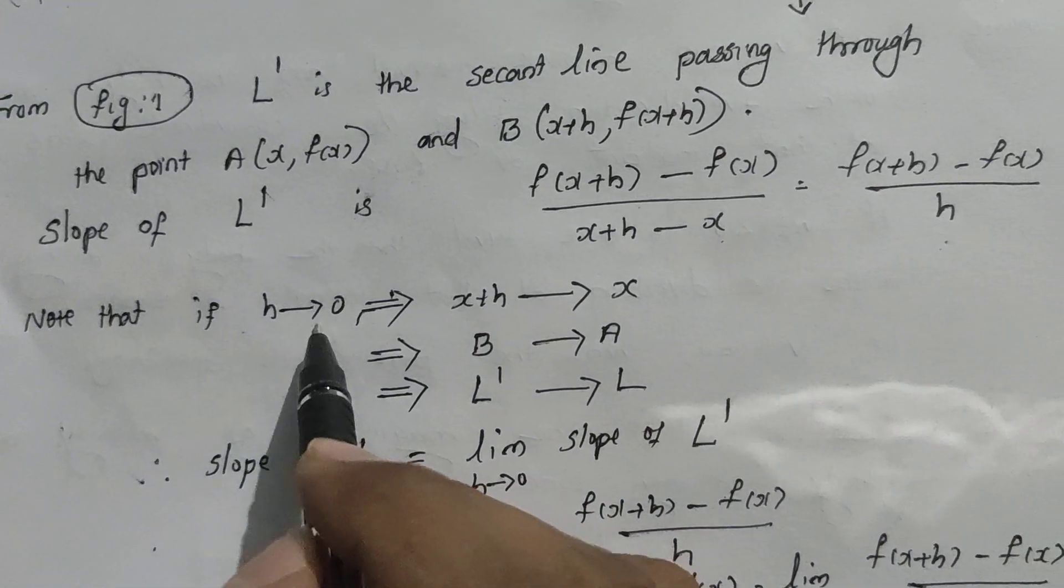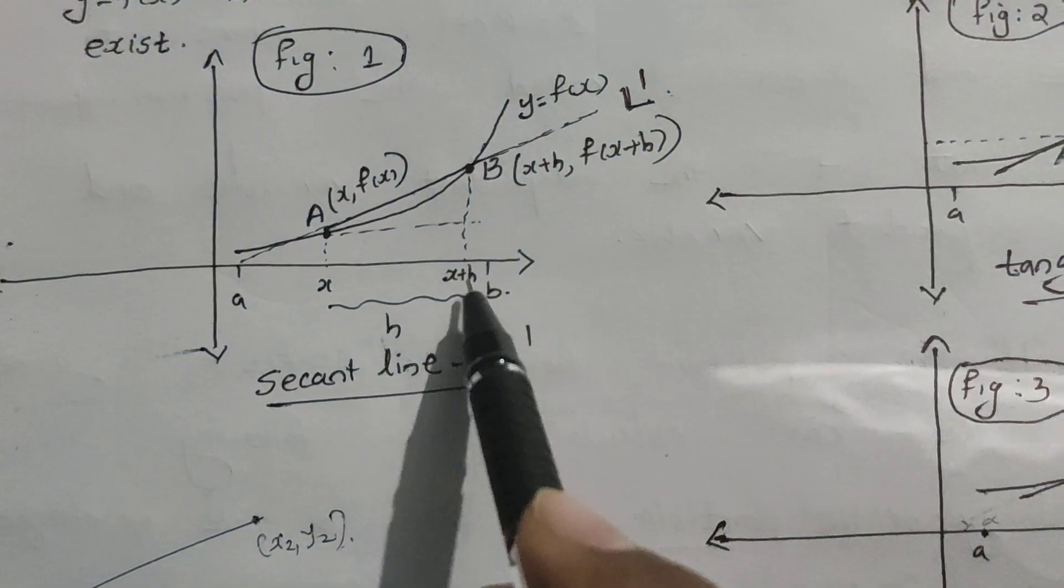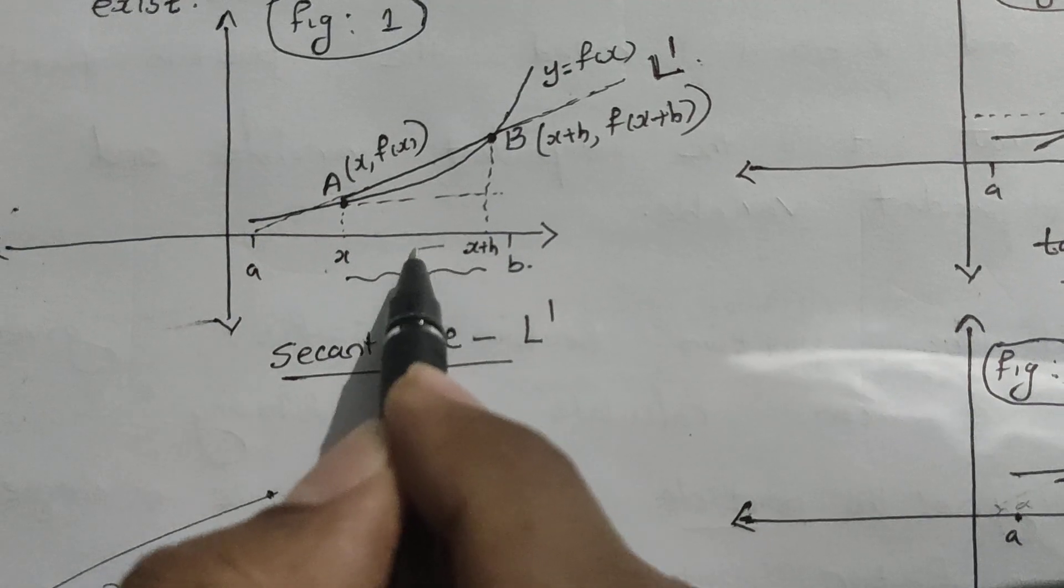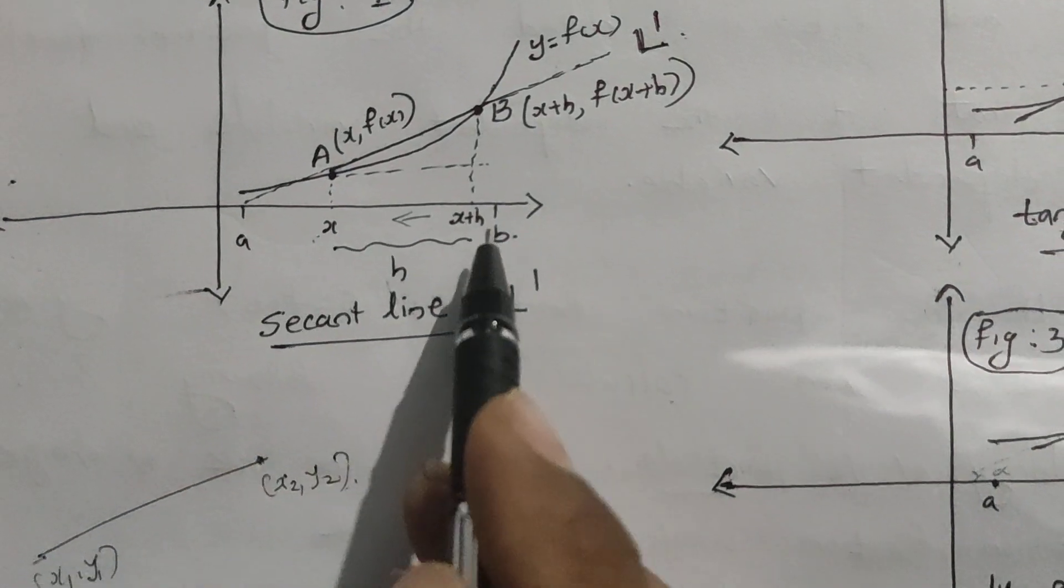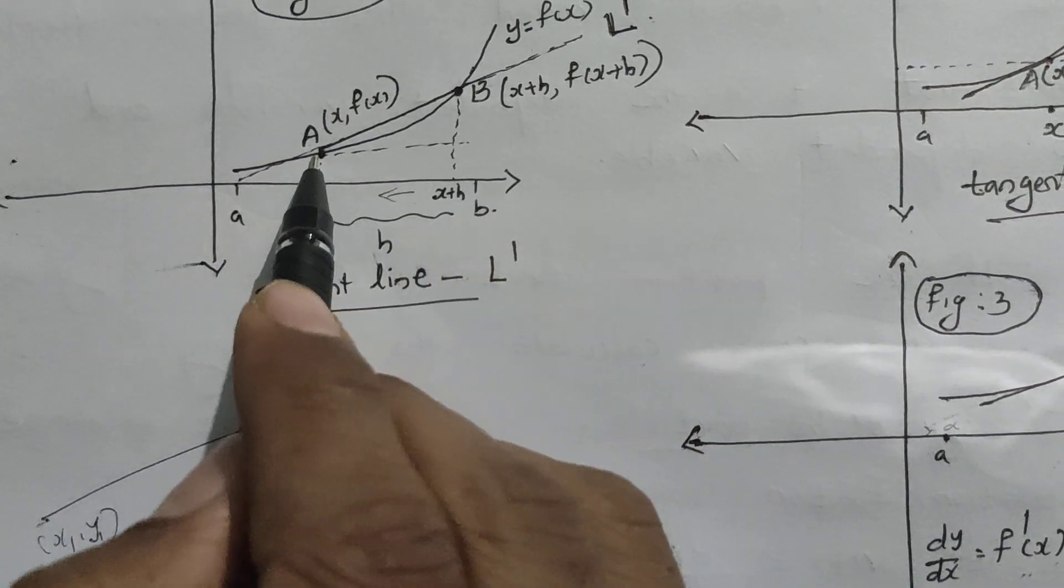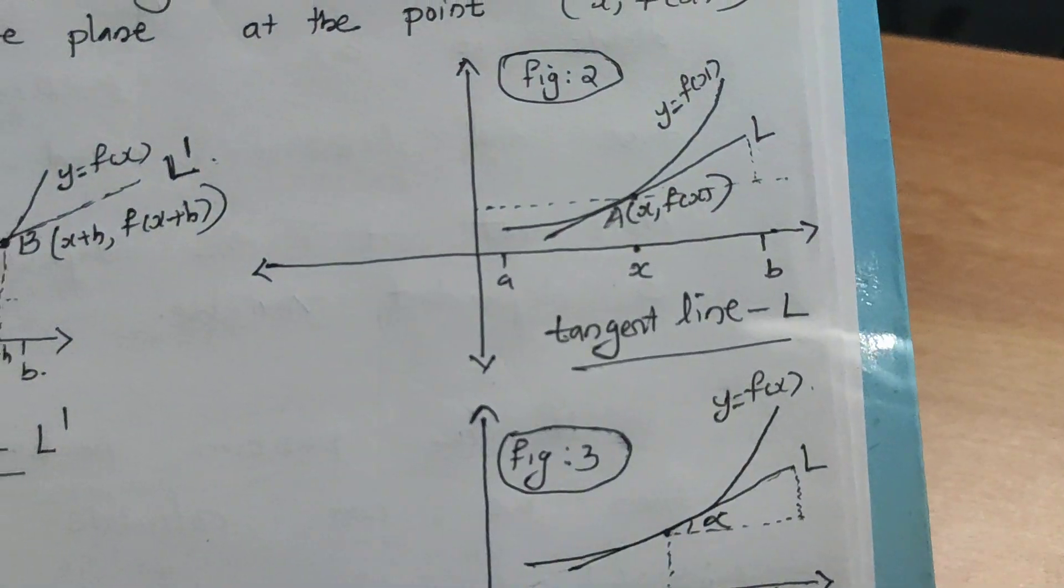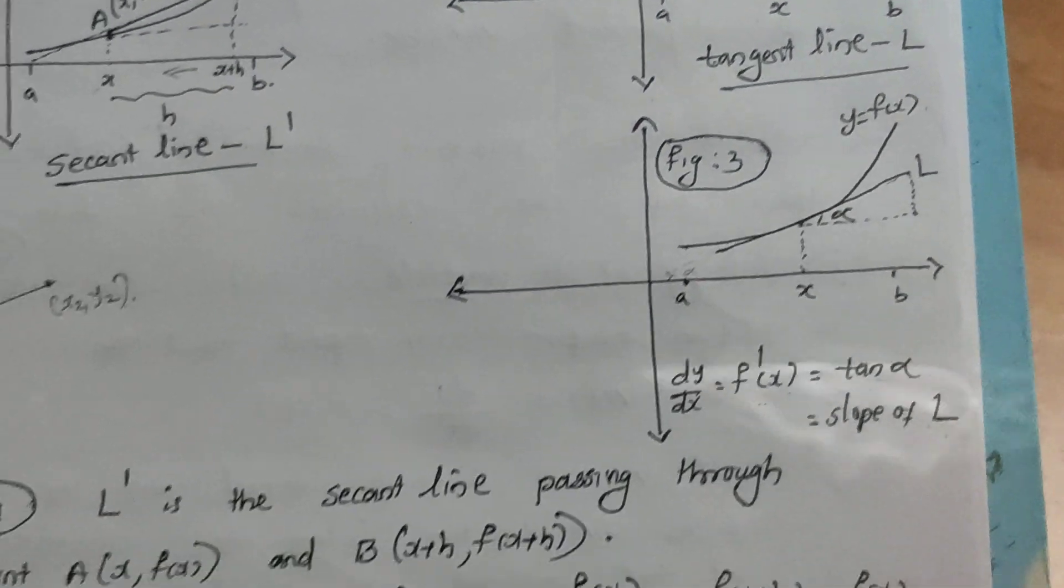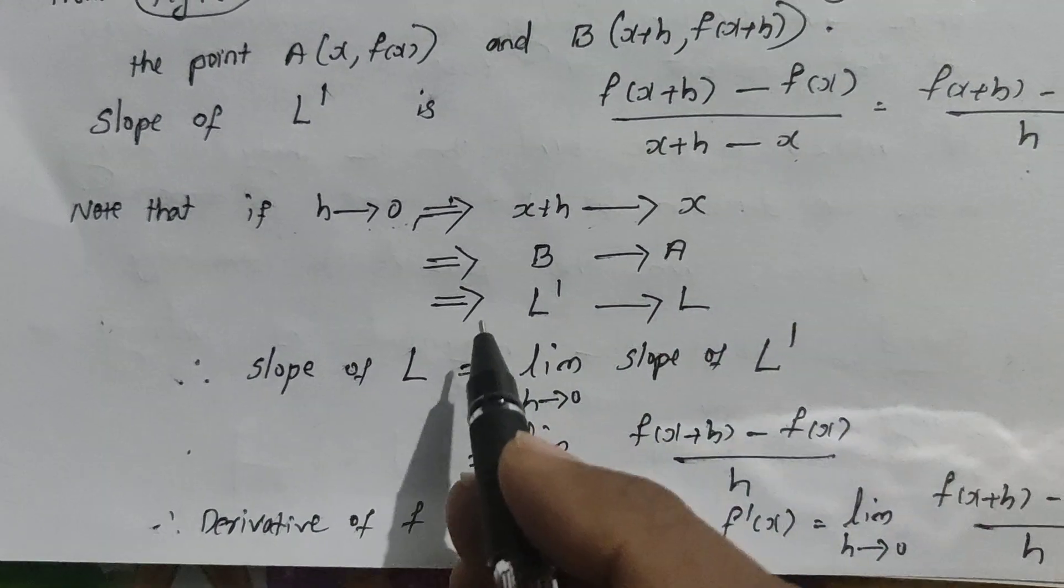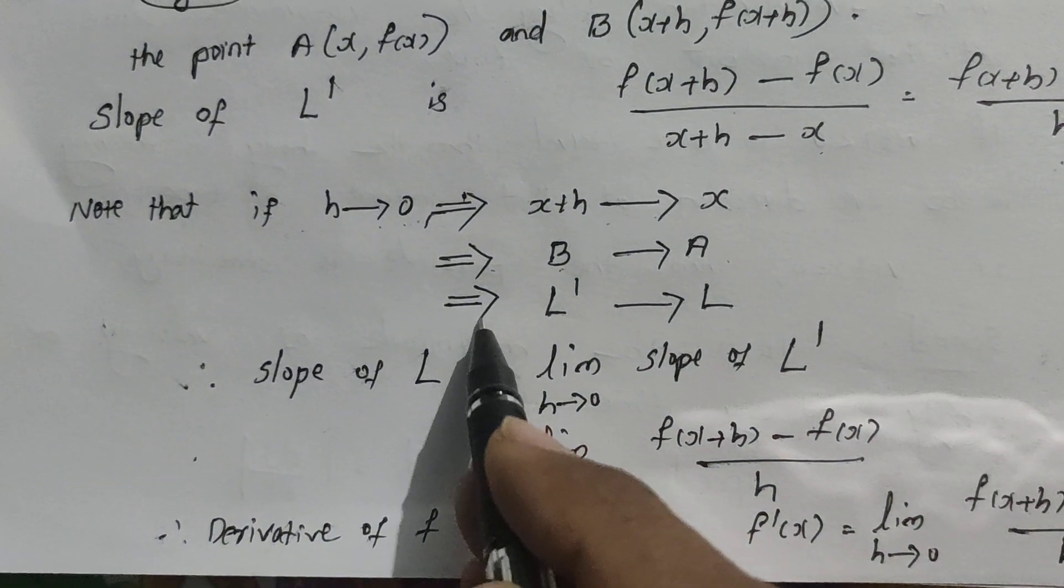Note that if h → 0, then x+h → x. That means our point B tends to A. When B → A, our secant line L' tends to the tangent line L.